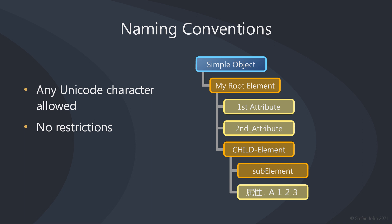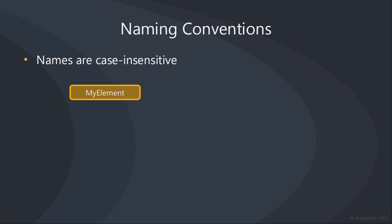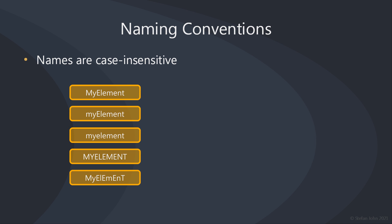When you are naming your nodes, you are free to use any character that Unicode provides. There are no restrictions on which characters you can use or in which order they must appear. Also note that names are case-insensitive. So whether you prefer upper camel case, lower camel case, or any other capitalization convention is up to you. They are treated as identical.